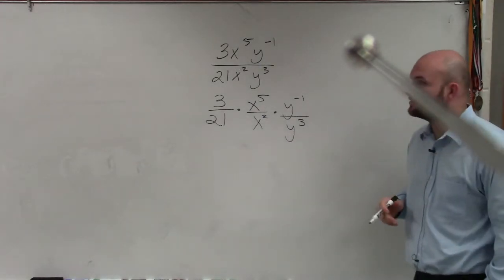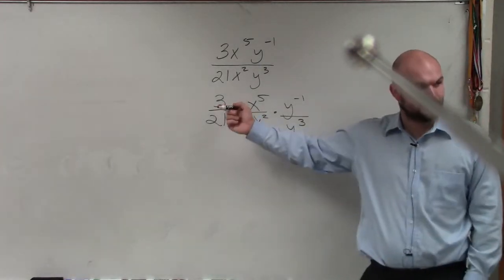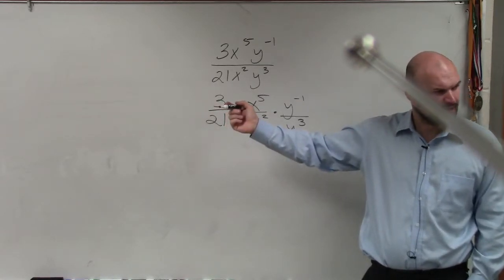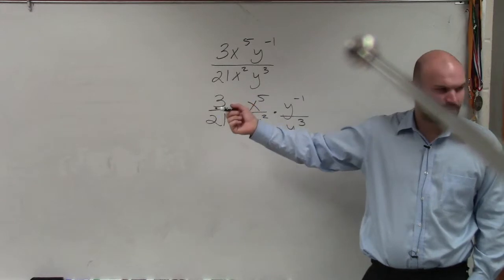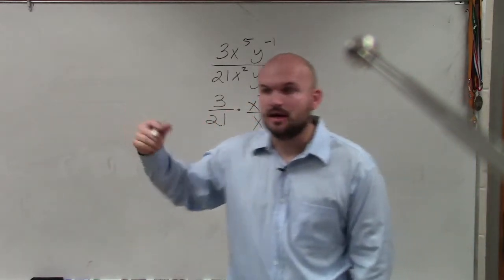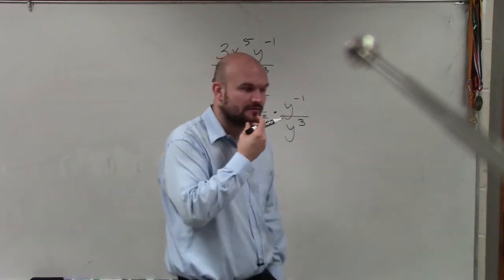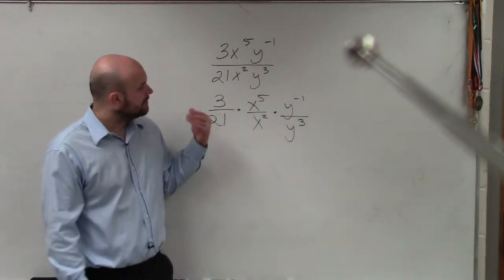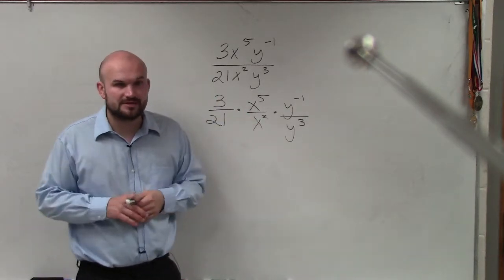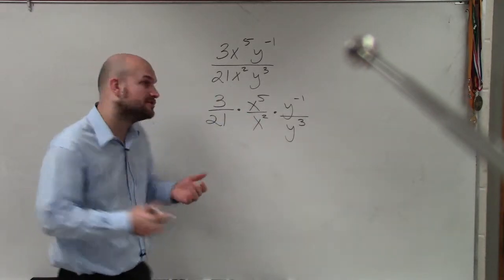Now, basically what I do is I just reduce. Does 21 divide into 3? Yes. 21 goes into 3 how many times? Zero. It doesn't go into 3. It actually doesn't go in there zero times, but it goes in there a fractional part. But can we reduce this? Is 3 over 21, can we reduce that to a smaller fraction? Yes. We can reduce it to 1 over 7.